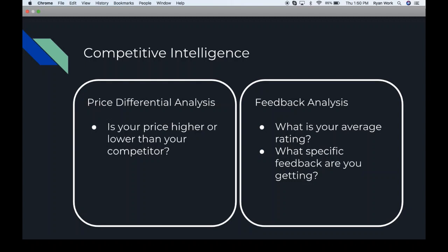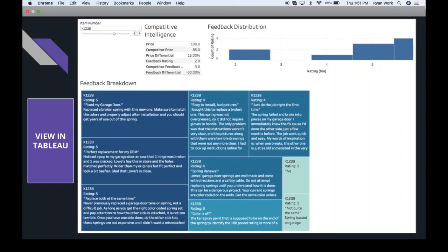Competitive intelligence breaks down into price differential analysis — are you priced higher or lower than competitors — and feedback analysis. If you have a superior product you can command a higher price, but if you're pricing higher than competitors who offer a superior product, your sales will drop dramatically. You can do quick ad hoc analysis to see if you or your competitors are outperforming each other on ratings.